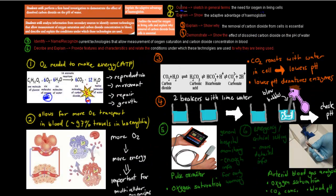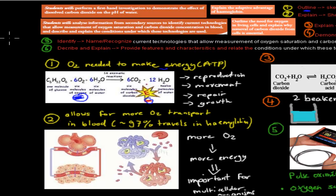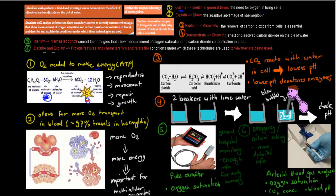The next dot point says 'outline' — sketch in general terms — the need for oxygen in living cells. We need oxygen to make ATP in the form of cellular respiration. Cell respiration is when glucose and oxygen come together to form ATP, and we need that energy to be able to reproduce, move, repair, and grow. Without oxygen, we wouldn't be able to do that and wouldn't be able to survive.